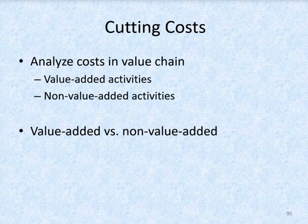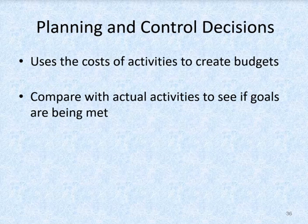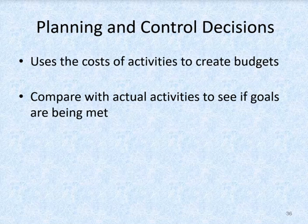Non-value-added activities such as storage of inventory and movement of parts from one area to another could be reduced or removed from the process with no ill effect on the end product or service. In addition to pricing, product mix, and cost-cutting decisions, a company can use ABC in routine planning and control. Activity-based budgeting can also use the costs of activities to help create budgets, and managers can compare actual activity costs to budgeted activities to determine how well they are achieving their goals.